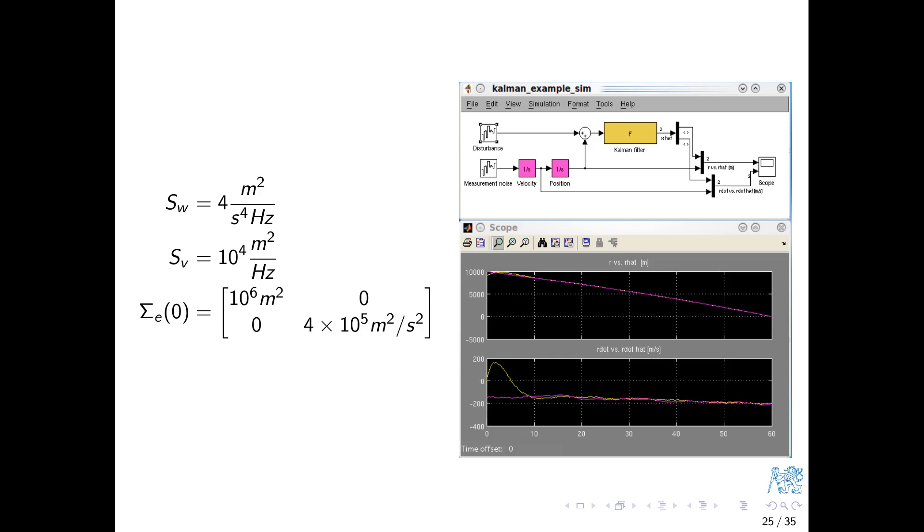Practically speaking, determining the spectral densities SW and SV can be difficult. Without diminishing the value of those attempts to estimate these parameters, I can propose an engineering attitude. The two coefficient matrices play the same role that Q and R played in LQR design. Therefore, they can be viewed as tuning knobs. It's not absolute values, but rather ratios between the two that matter.